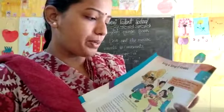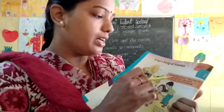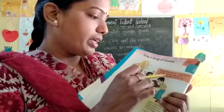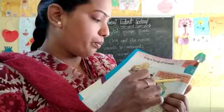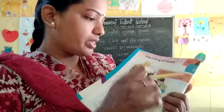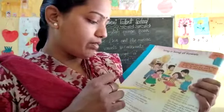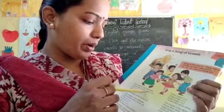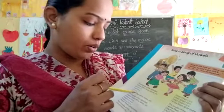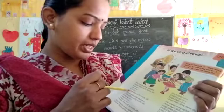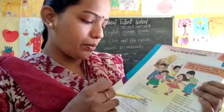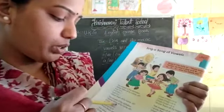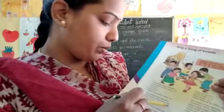He had a dog, Bingo was his name-o. See here the vowels of the alphabet — I know them all by name-o. A, E, I, O, U are called vowels. I know them all by name-o. The vowels of the alphabet, I know them all by name-o.